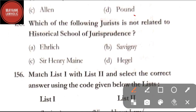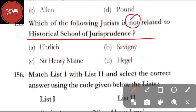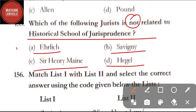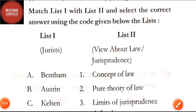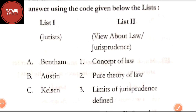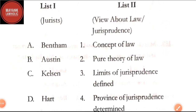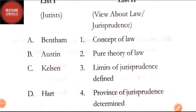Question number 154: criticizing Savigny's theory, who said that Savigny encouraged juristic pessimism — option A: Montesquieu; option B: Maine; option C: Allen; option D: Pound. The correct answer is option D, Pound. Question number 155: which of the following jurists is not related to historical school of jurisprudence — option A: Ehrlich; option B: Savigny; option C: Sir Henry Maine; option D: Hegel. The correct answer is option A, Ehrlich. Savigny, Sir Henry Maine, and Hegel are related to historical school.